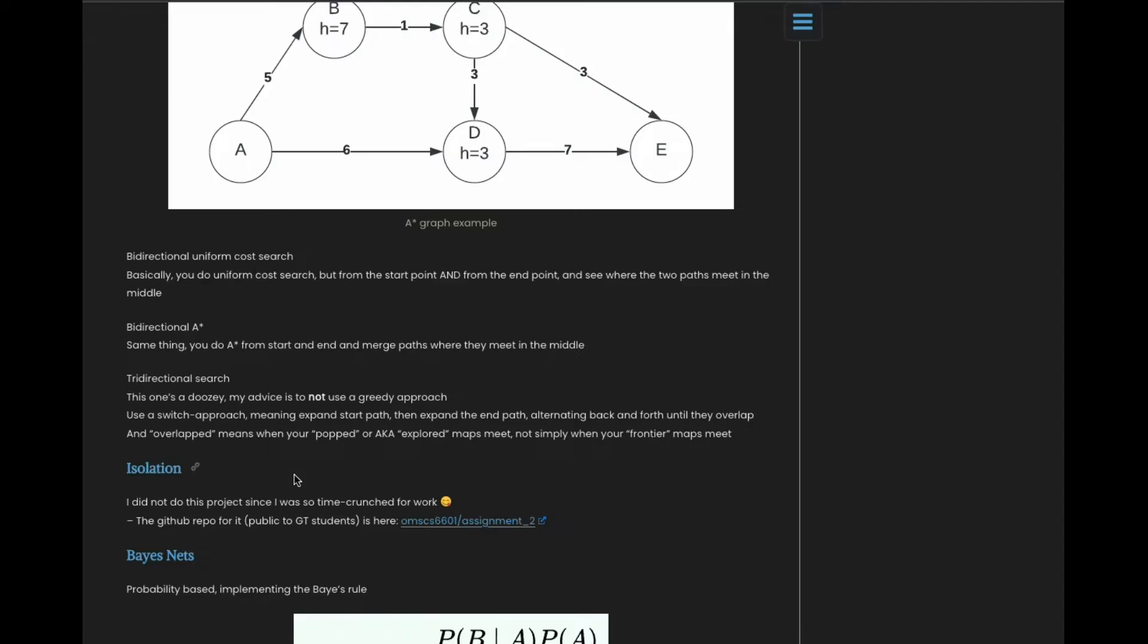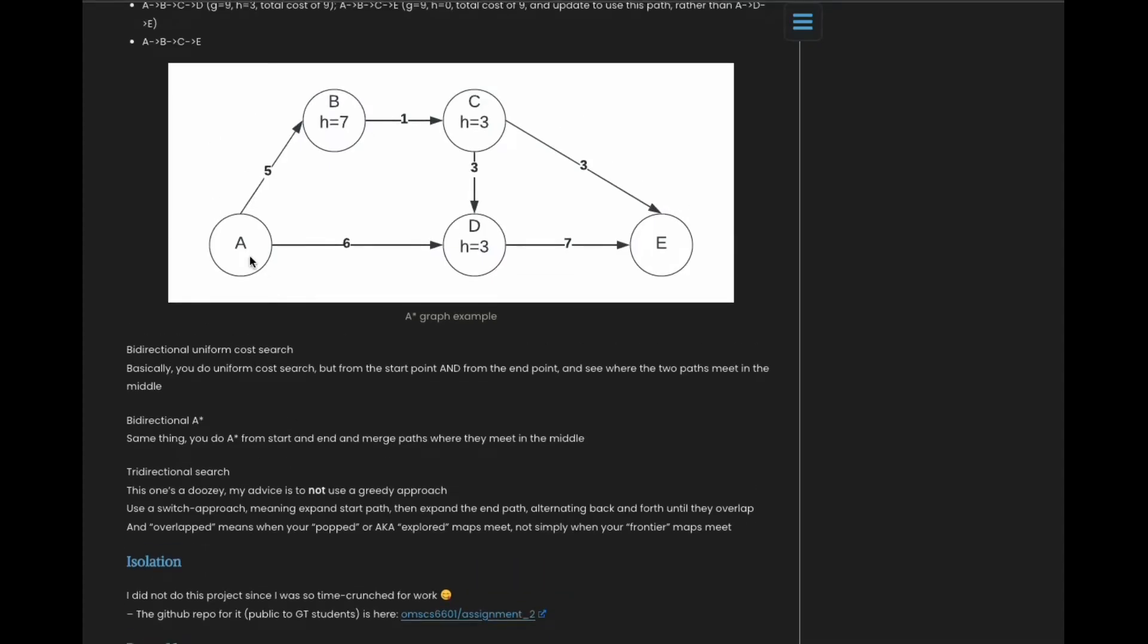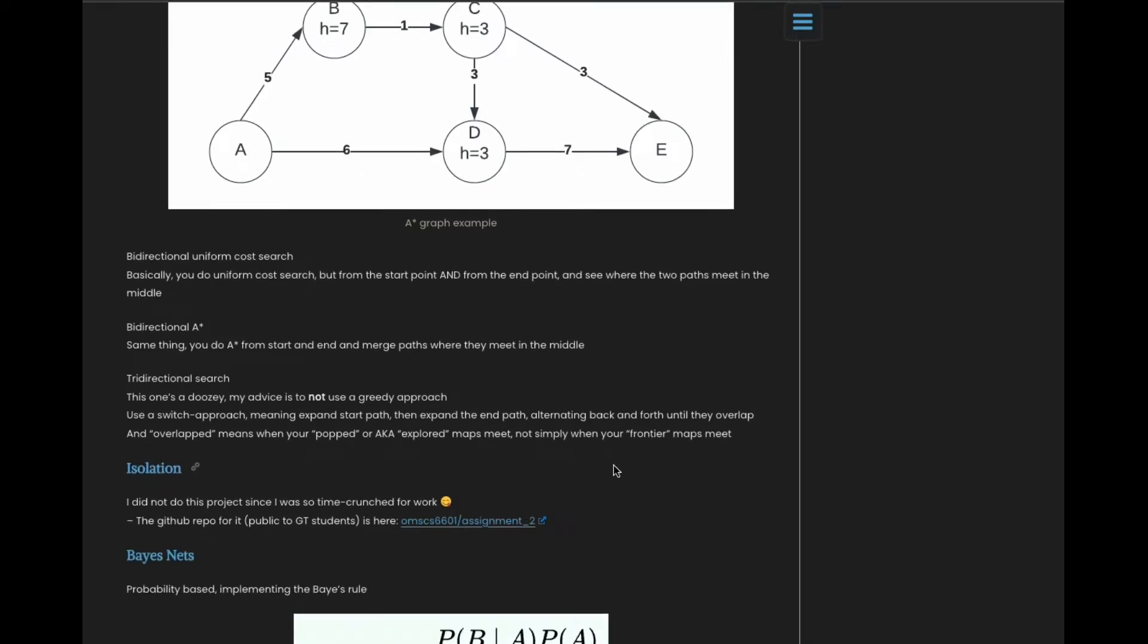The last part I will talk a little bit about, which is tri-directional search. You get three cities and you want to find the route between the three cities that's the shortest. So if they give you A, C, and E, you want to find the route that would be the least costly to go from all three cities.